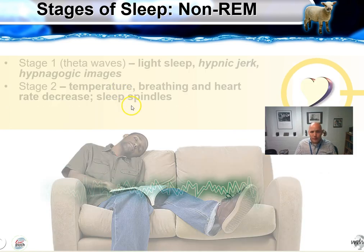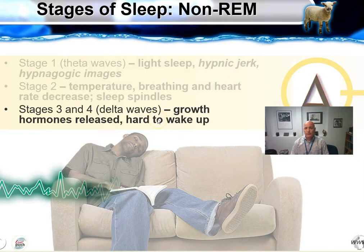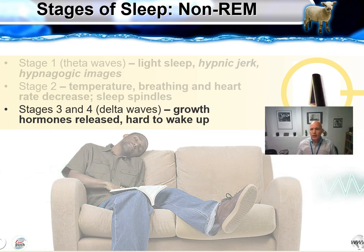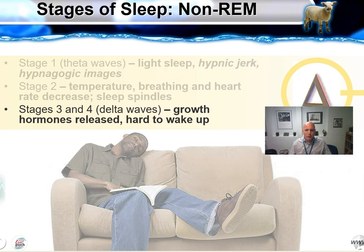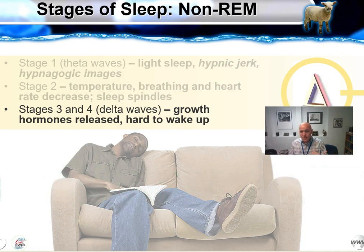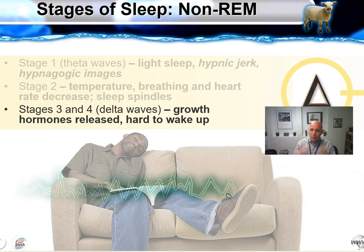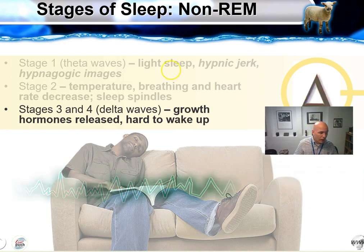Stage two sleep happens when our temperature begins to change and our breathing and heart rate decrease. Stage three and four is delta wave sleep, where growth hormones are released and it's very hard to wake up. This is sometimes called 'train wreck sleep' — if someone wakes you up about 45 minutes into a deep nap, you'll be disoriented because your brain waves are very slow and you can't really process. You don't know whether it's five o'clock at night or five in the morning.